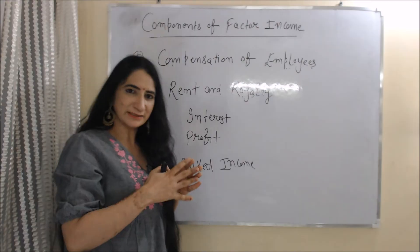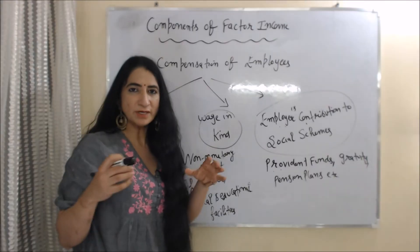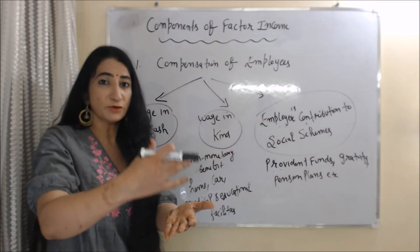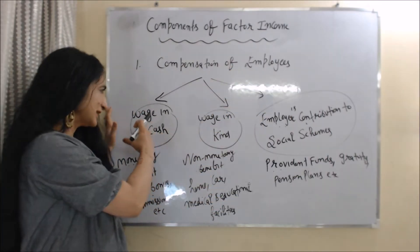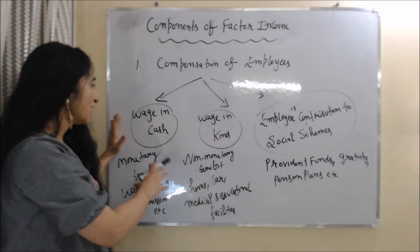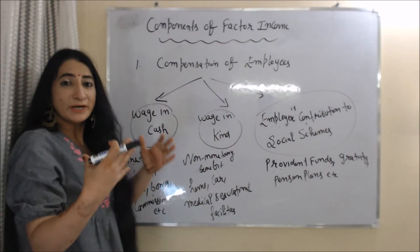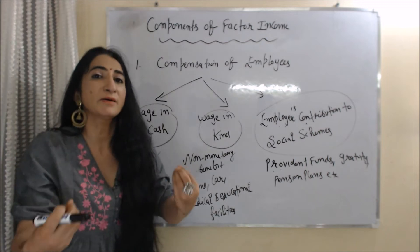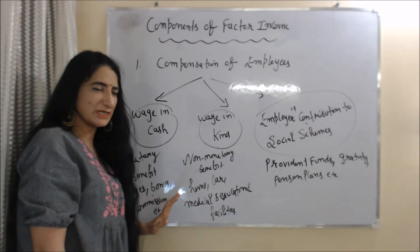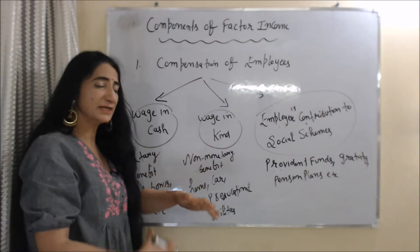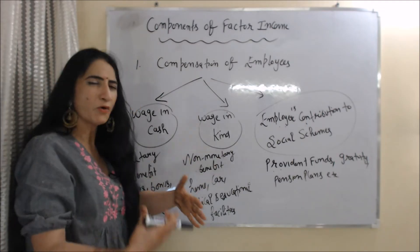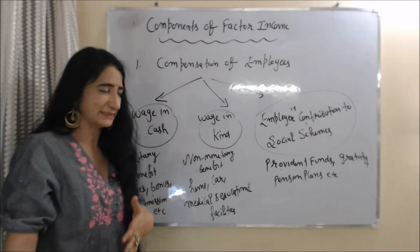The first component of factor income is compensation of employees, which includes wages in cash, wages in kind, and employer contribution to social schemes. Wages in cash include monetary benefits provided by companies to employees — for example, wages, bonus, commission, etc. Wages in kind include non-monetary benefits such as home, car, medical, and education facilities.